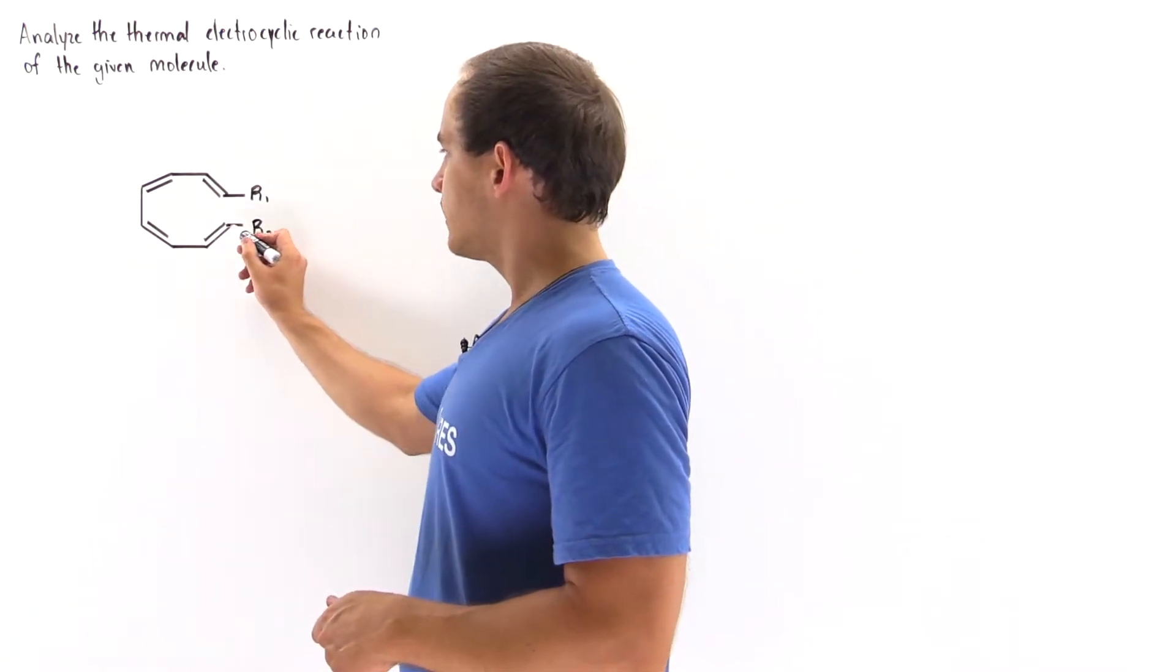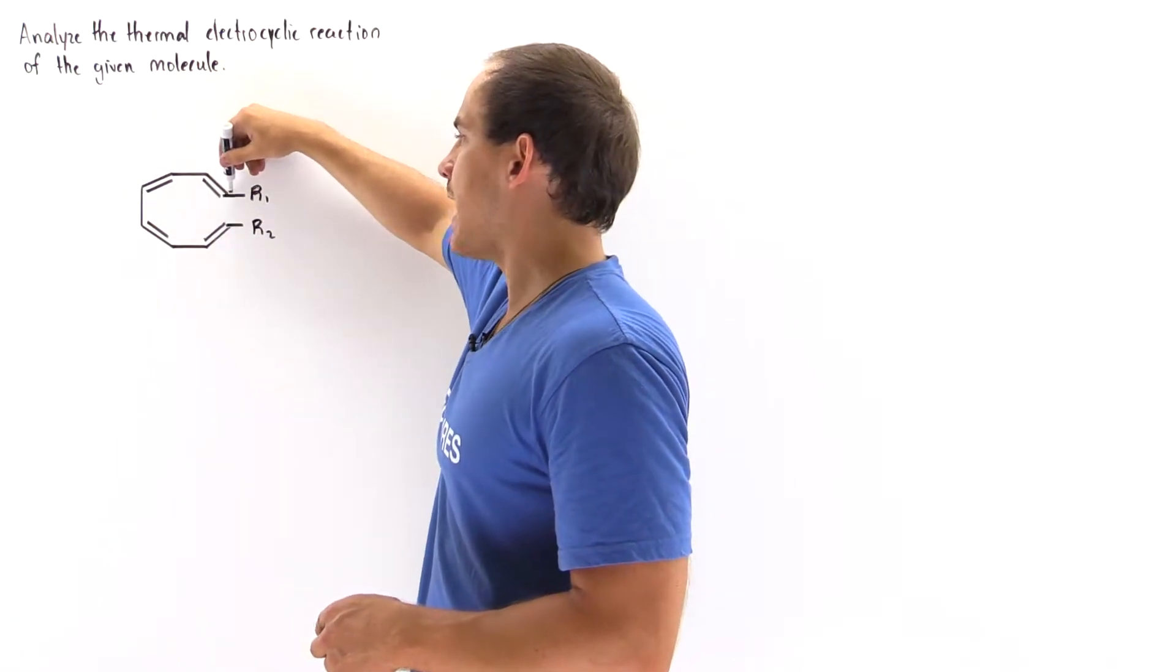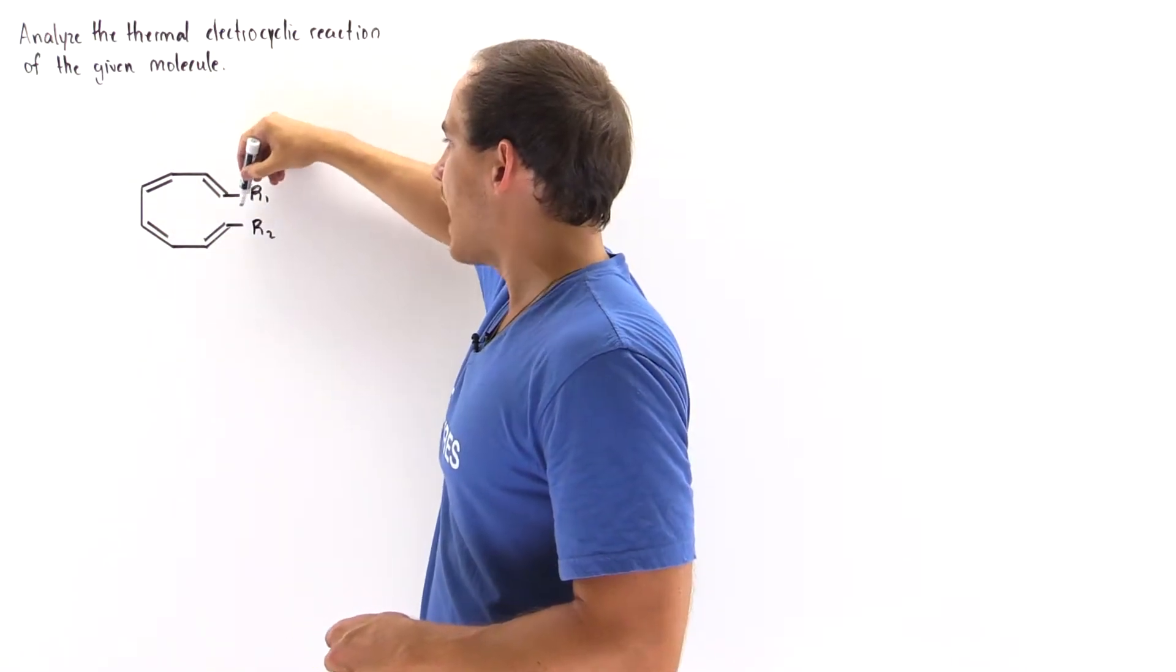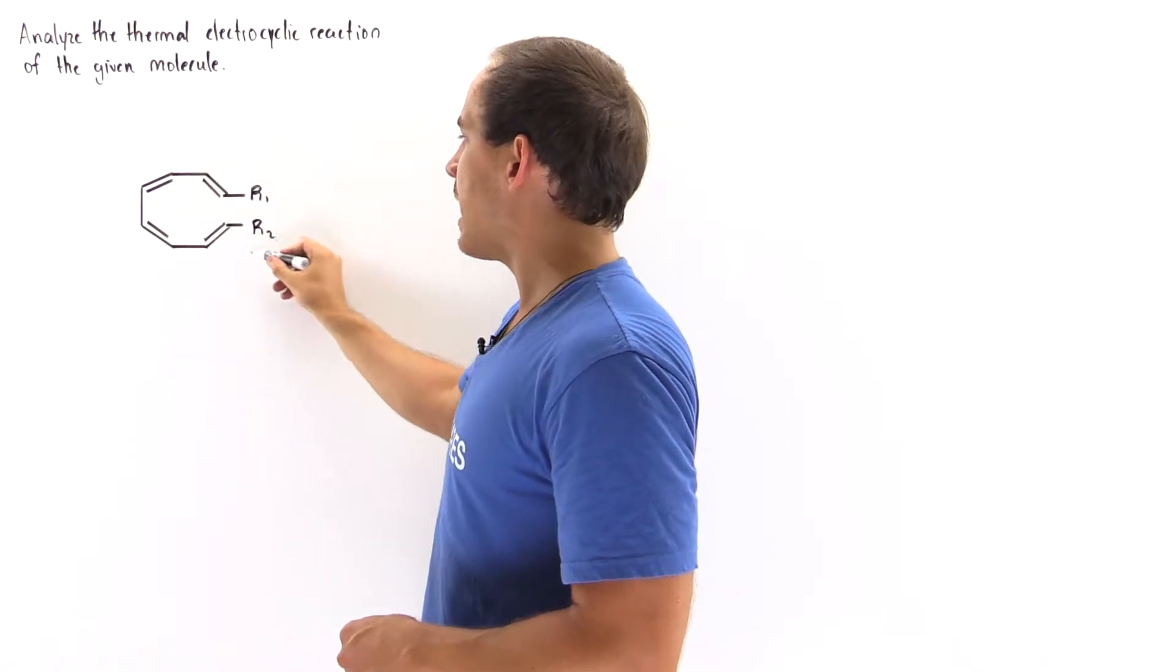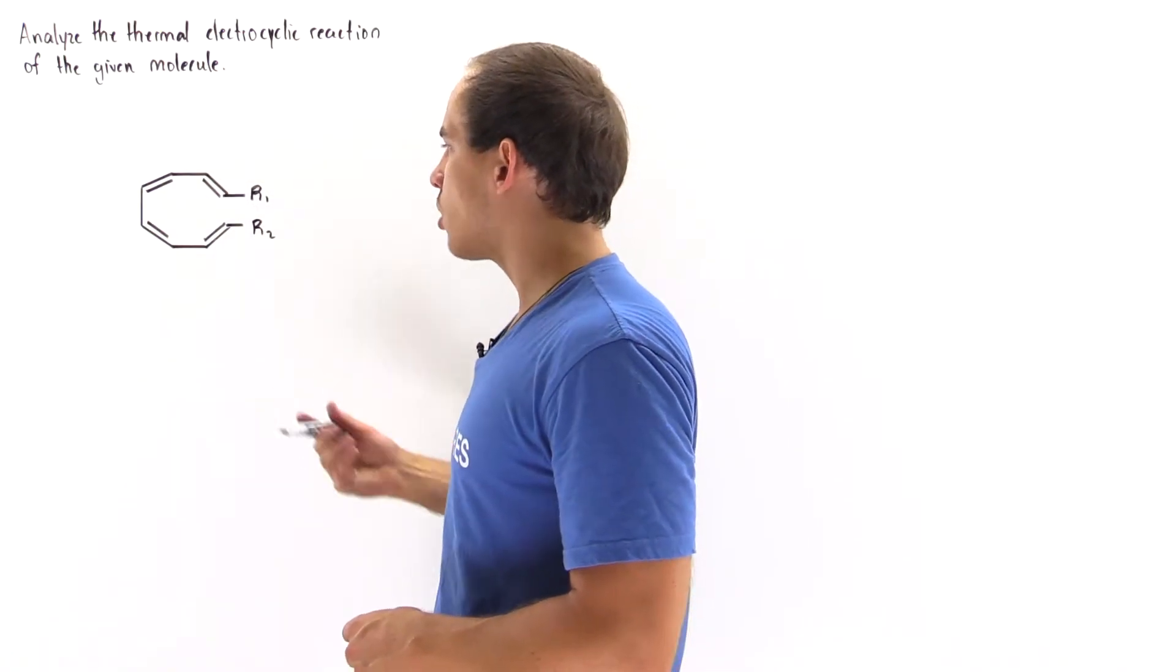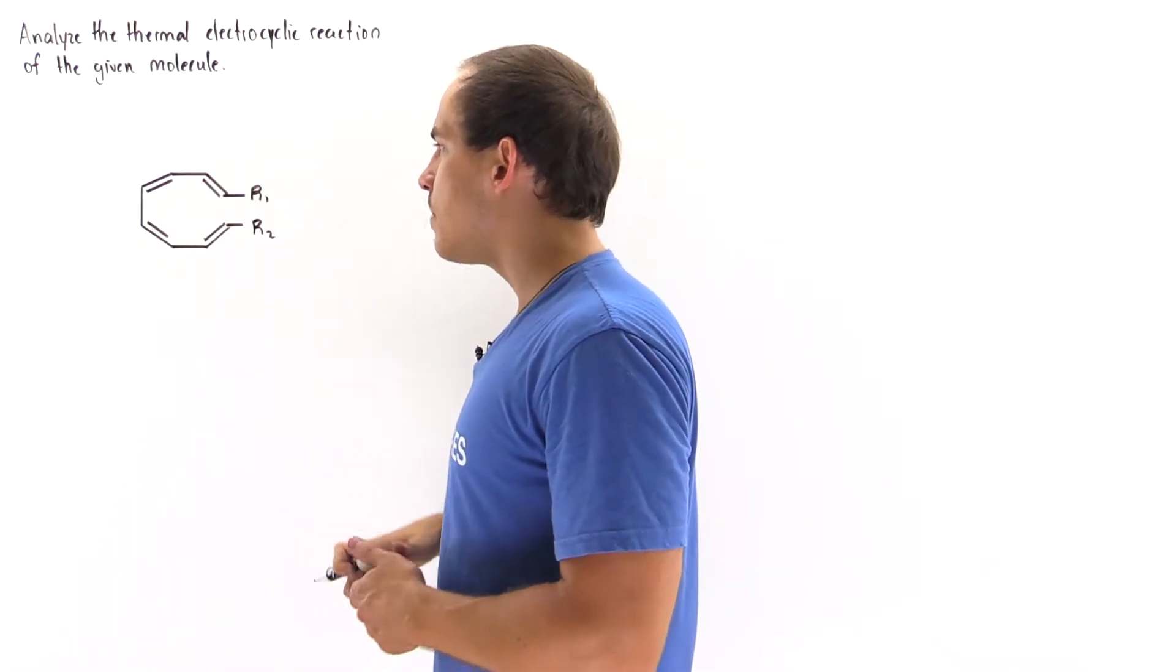So we have a molecule that contains eight carbon atoms. At the first carbon atom and the last carbon atom we have these hydrocarbon R groups, and we also have four pi bonds.